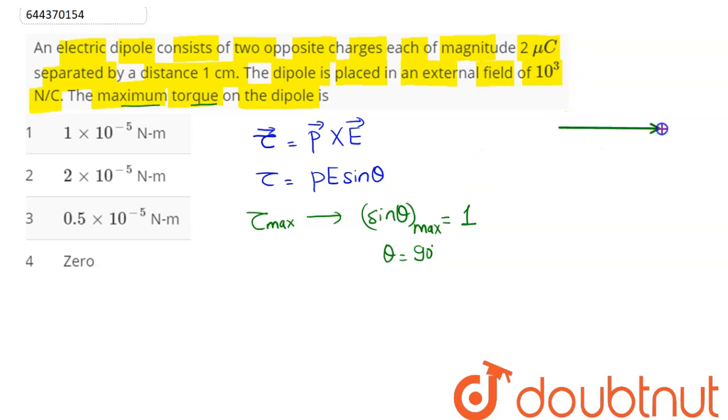Which means the electric field and the dipole moment are perpendicular to each other. That is, this is our electric field and this here is our dipole moment perpendicular to each other.